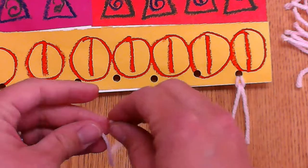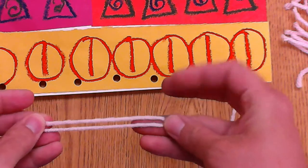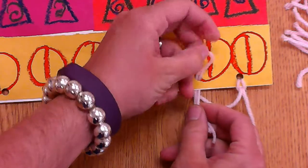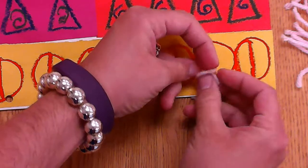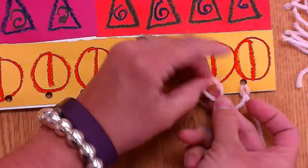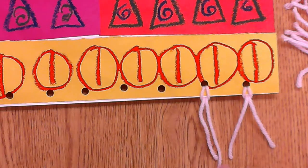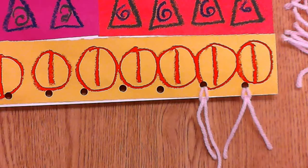Fold in half, get my loop, push the loop through the back of the paper, open up the loop, and then put the two tails through the loop and gently pull. So then now you have fringe on your blanket.